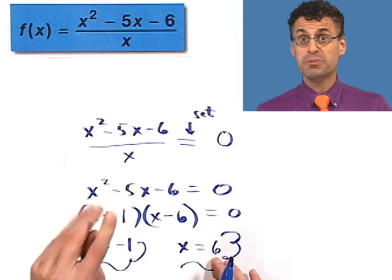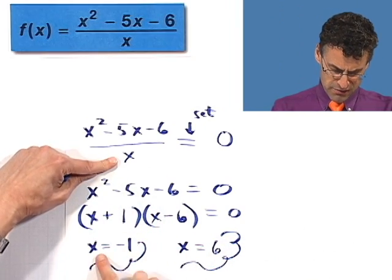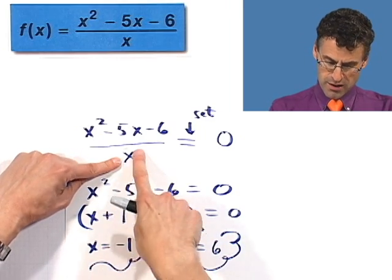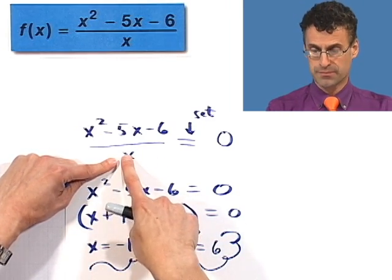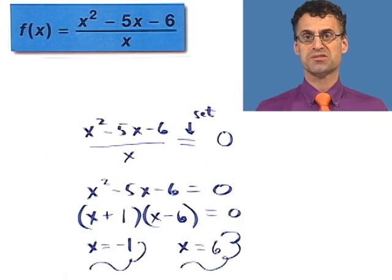x equals negative 1, x equals 6. But I have to make sure that they really are by checking, making sure that none of these values makes the denominator equal to zero. If I let x equal negative 1, then I have negative 1. That's not zero. If I let x equal 6, then I have a 6 down there. That's not zero. So we're good to go. These are the zeros. Isn't that great? How cool is that? I know you want more.